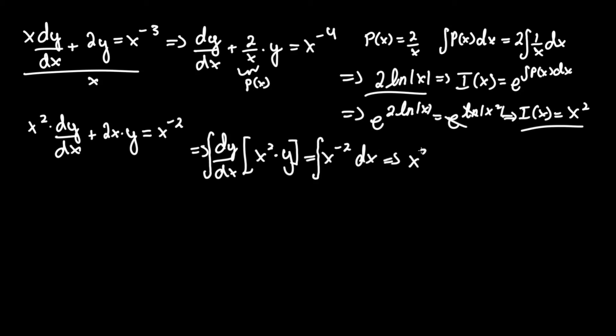This becomes x^2*y equals the integral of x^(-2). The integral of x^(-2) equals x^(-1), bringing the exponent up by plus one, divided by negative one, plus c. So x^2*y = -x^(-1) + c.